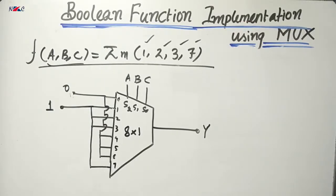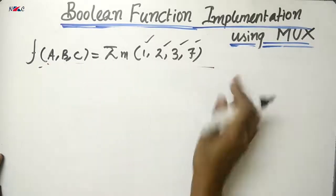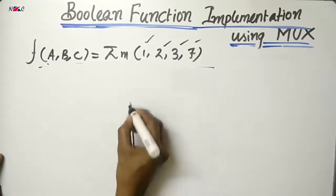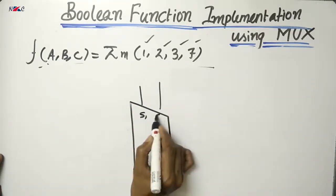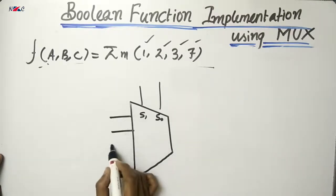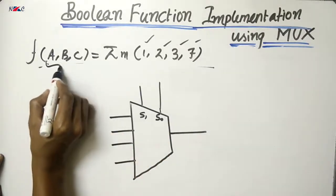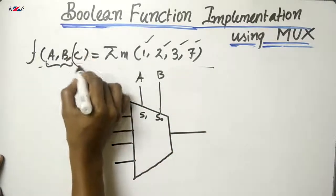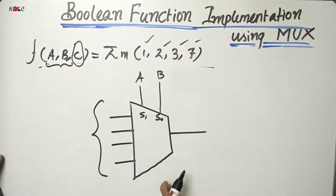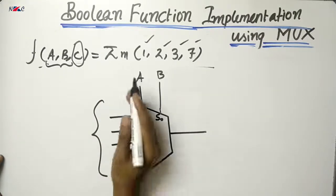For the second method with the same function, I choose a multiplexer with two select lines — a 4-by-1 MUX with four input terminals: I0, I1, I2, I3. We have three input variables, so we apply A and B to the select lines and use C as the variable applied through the input terminals.